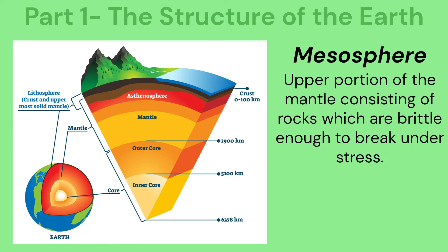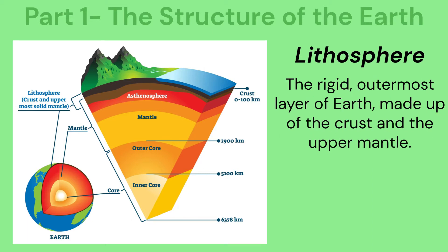The mesosphere is the upper portion of the mantle consisting of rocks which are brittle enough to break under stress. The lithosphere is the rigid, outermost layer of earth made up of the crust and the upper mantle.